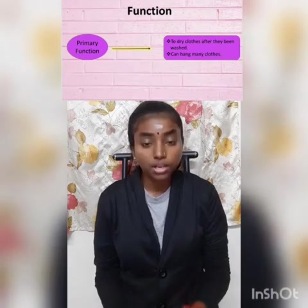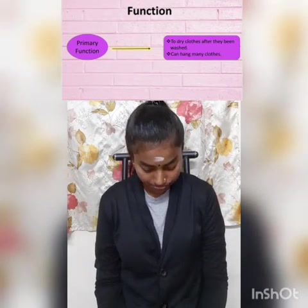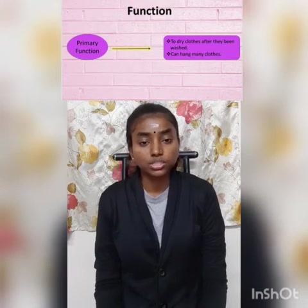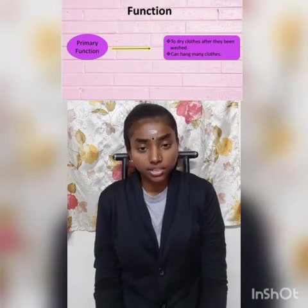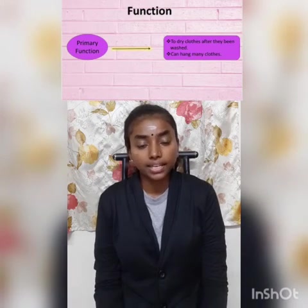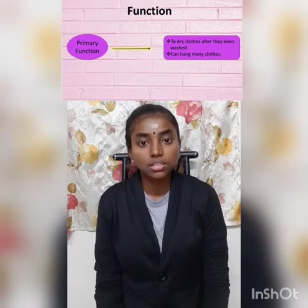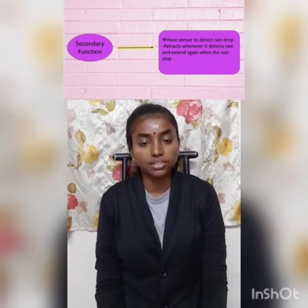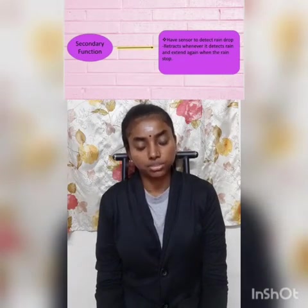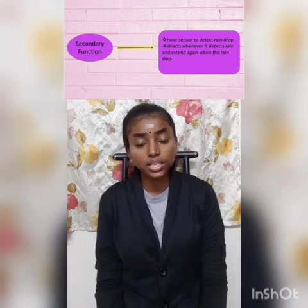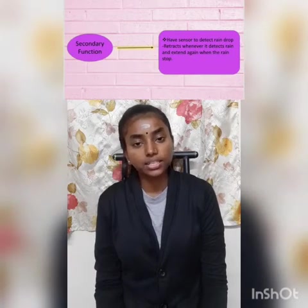The primary function of this automatic cloth drying rack is to dry the washed clothes. We can dry many clothes at one time because there are 7 foldable layers. The secondary function is that it has a sensor to detect raindrops. Whenever it detects raindrops, it will retract, and extend again when the raindrops stop.